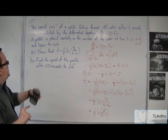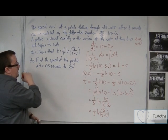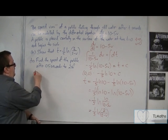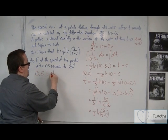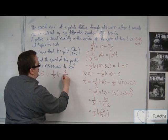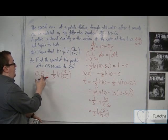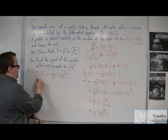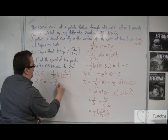Find the speed of the pebble after 0.5 seconds. So after 0.5 seconds, t is 0.5, and we've got that equal to one-fifth log of 2 over 2 minus v. So multiply both sides by 5. So we'll get 2.5 is log of 2 over 2 minus v.